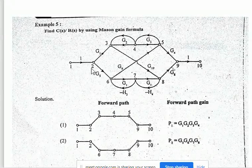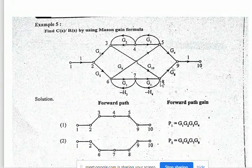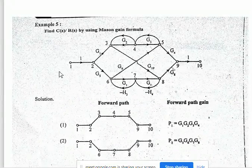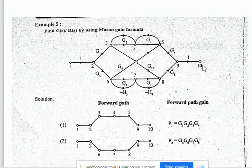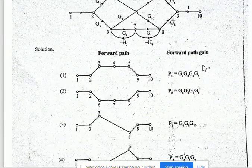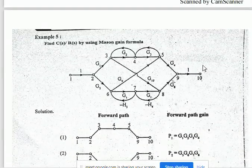In another way: 1 to 2, 2 to 6, 6 to 7, 7 to 8, 8 to 9, and 9 to 10. This is another way of signal flowing from input to the output. We have to check if there are any other ways.